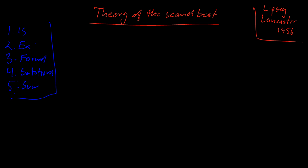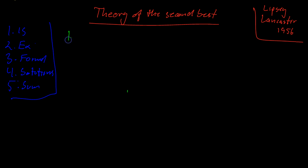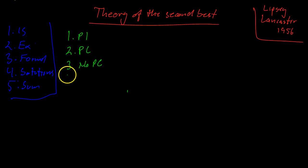That's kind of abstract, so let's give some examples. One example would be: let's say you have a free market economy and you have four conditions for the market economy to work. You need perfect information, perfect competition, no public goods, and no externalities. If all four conditions are satisfied, then a free market economy will work perfectly well.